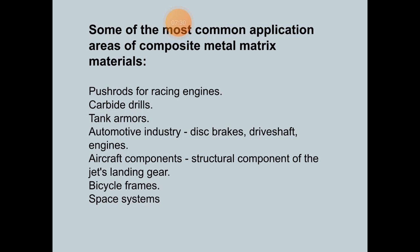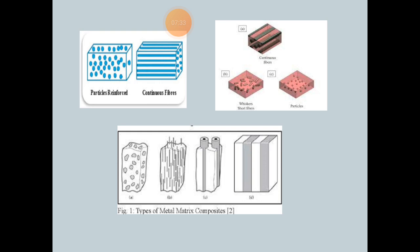There are various types of MMC. The main types are: particle-reinforced MMC, short fiber or whisker-reinforced MMC, and continuous fiber or sheet-reinforced MMC. This figure shows the various types of MMC, illustrating how they are structured.